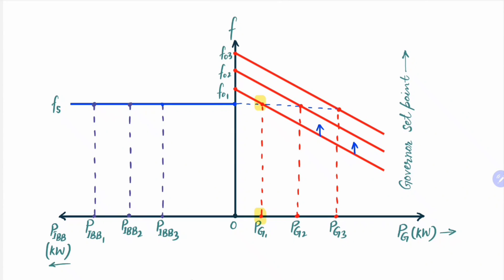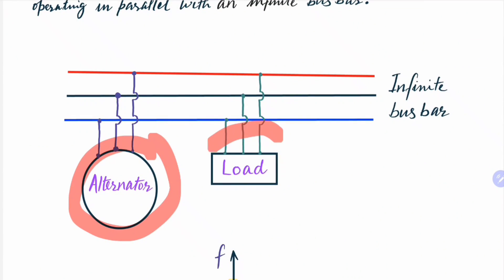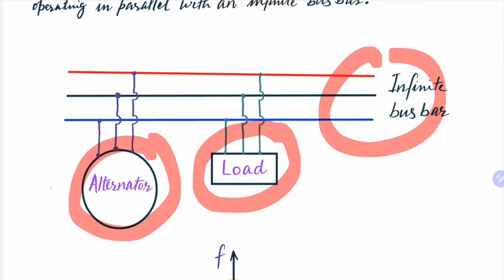Then its no-load frequency will shift up from f01 to f02. Once the mechanical input to the alternator is increased, that is once the governor set point is increased, this curve will shift up so that the no-load frequency of the alternator shifts up. Since the infinite bus bar frequency cannot be changed, it will be fixed at its normal value fs. The point of operation will shift so that the frequency remains fs and the active power supplied by the alternator will increase from a negligible value at synchronization to pz2.